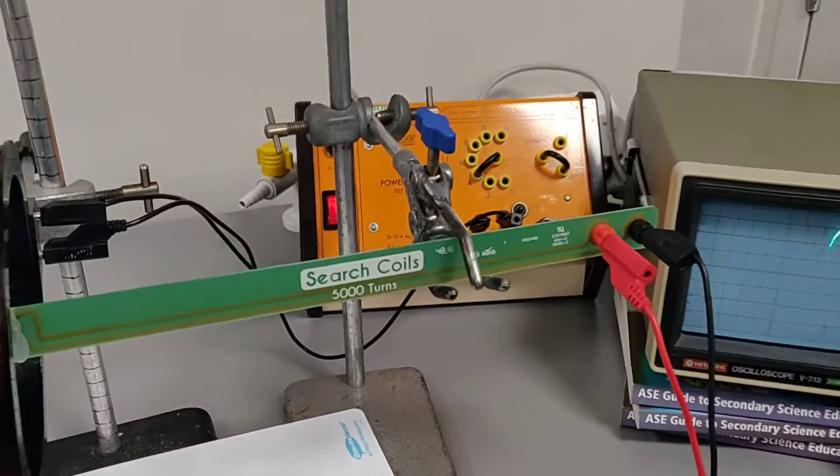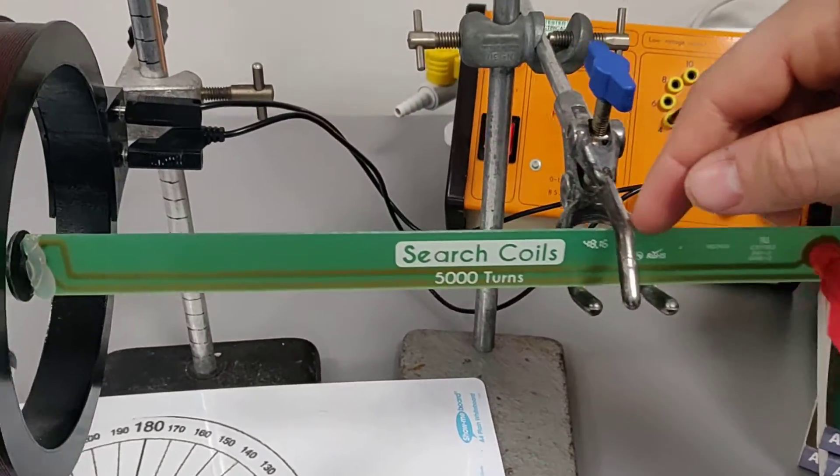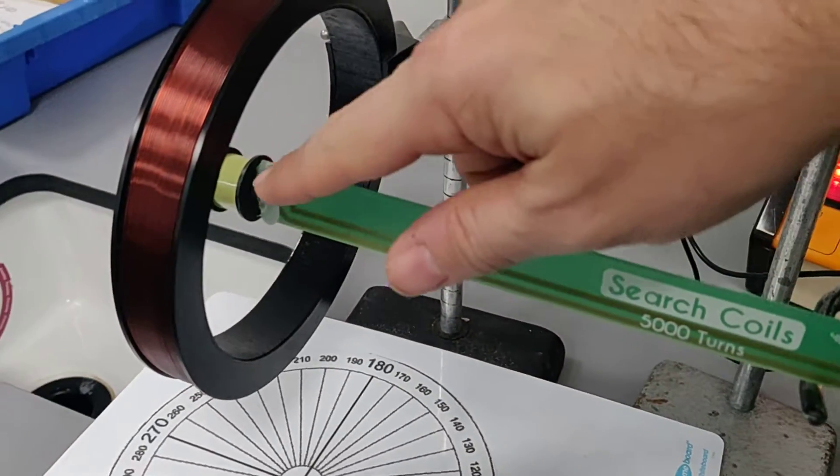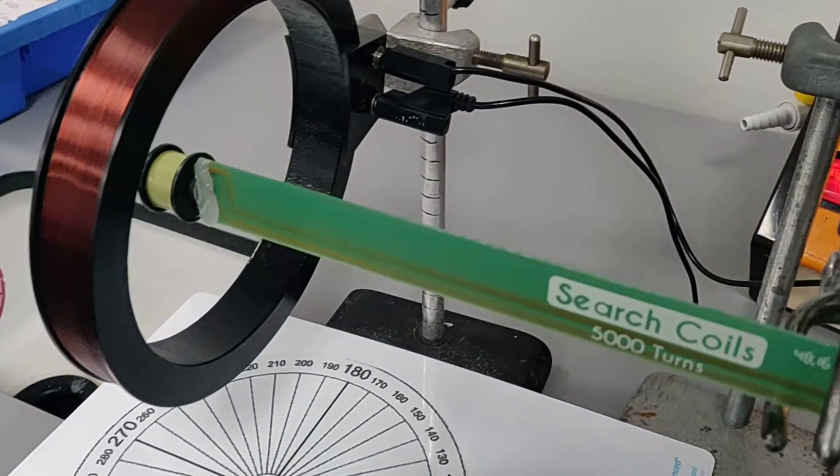You can see here that I've got a search coil. It's a purchased search coil. It's mounted on this circuit board, and that's the search coil there. There are 5,000 turns on this one.